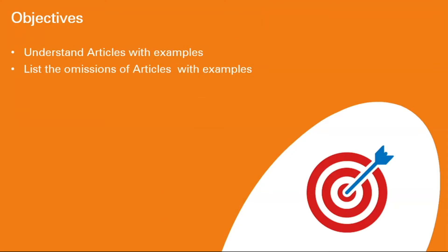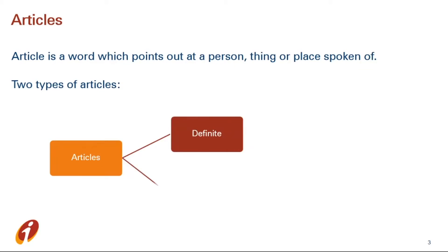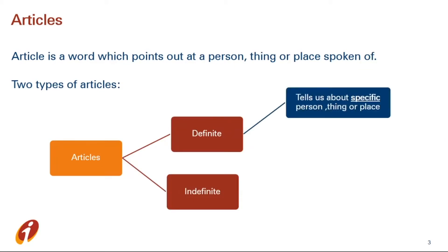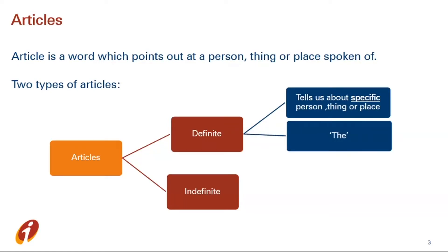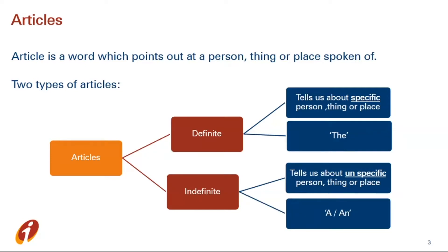Along with their examples, we will list out the omissions of articles. An article is a word which points out a person, thing, or place being spoken of. Basically there are two types of articles: definite and indefinite. Definite articles tell about a specific person, thing, or place — for this we use the article 'the'. Indefinite articles tell about an unspecific person, thing, or place — for this we use the article 'a' or 'an'.